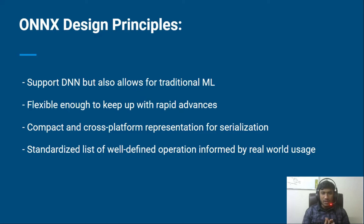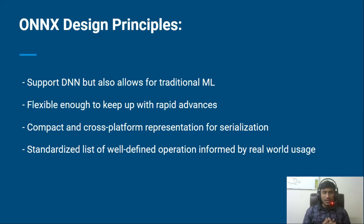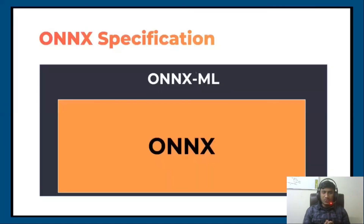ONNX is also a compact and cross-platform representation for serialization, and it provides a standardized list of well-defined operations informed by real-world use cases. By using ONNX you are solving real-world use cases because you can convert a model from one framework to another. If you have your ONNX model, you don't have to worry about your system, your hardware, or your framework — you can export and import it anywhere and start predicting.